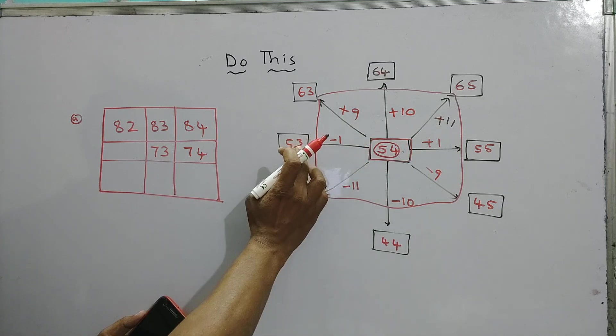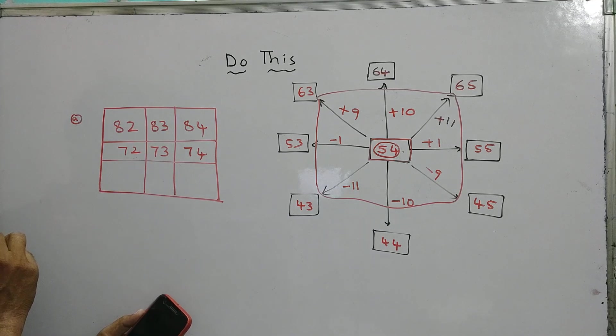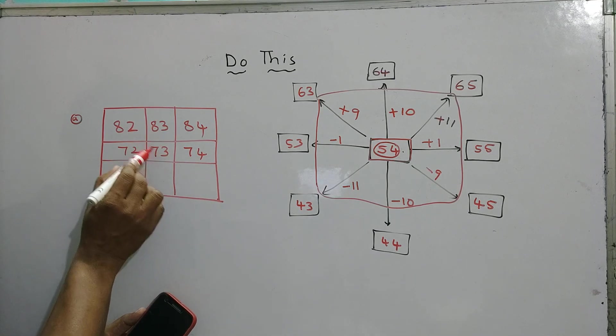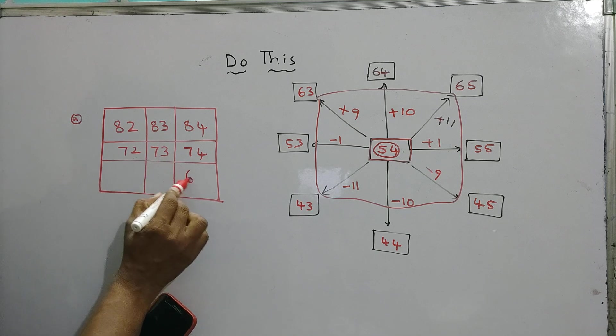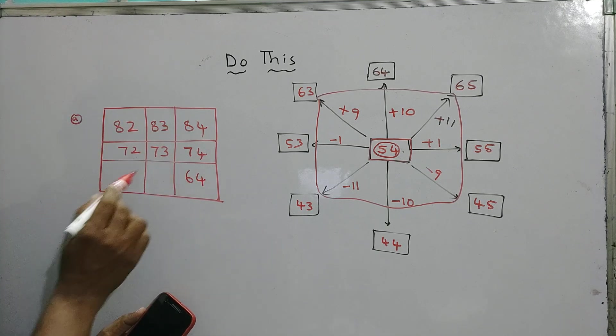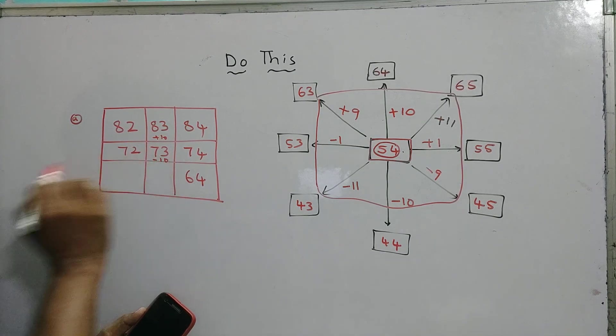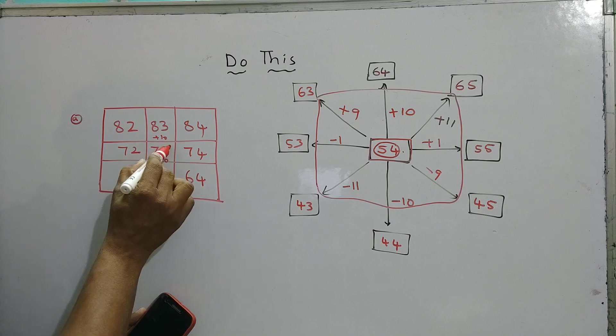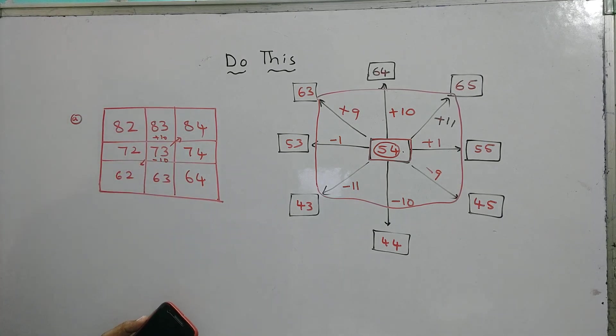54 minus 1 is 53. Here 73 minus 1 is 72. Same like that, here we added plus 9, now subtract 9, you will get 64. Next, here we added plus 10, now subtract minus 10, you get 63. Here we added plus 11, here subtract 11, you get 62. So this is the filling process.